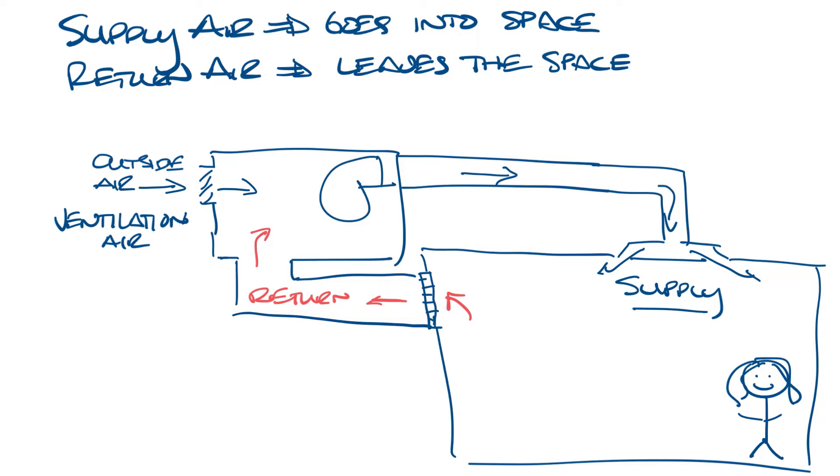The return air can also be taken straight to outside. So let's put a damper here that would control it going into our air handler and we'll put another damper over here that will go back outside the building. And now this is exhaust air. There would probably also be an exhaust fan but I didn't draw that in. ASHRAE also has requirements for exhaust air and what types of air need to be exhausted.